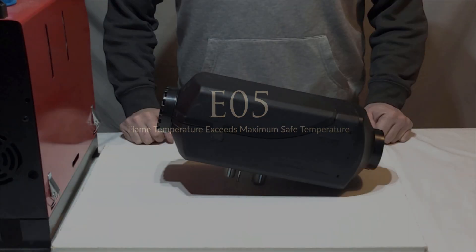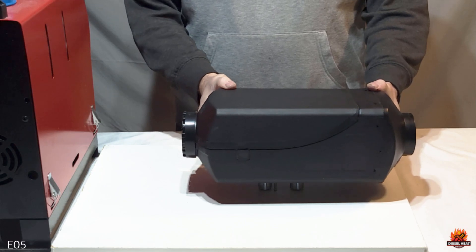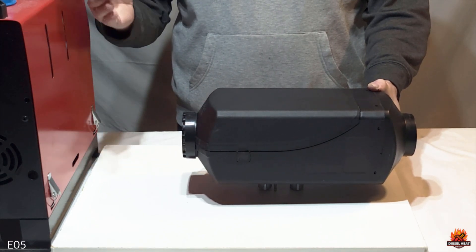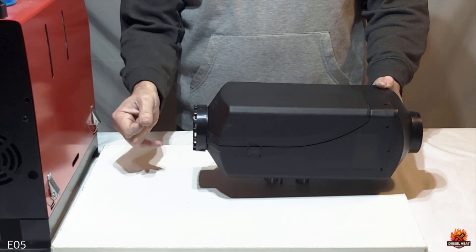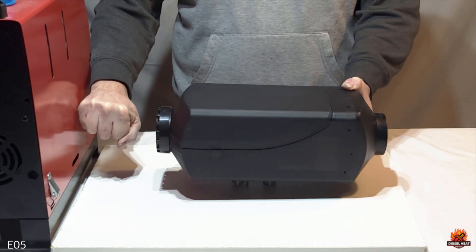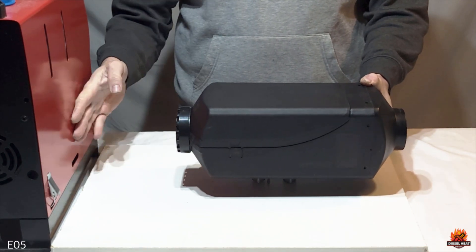Error code 5, flame temperature exceeds maximum safe temperature. To fix error 5, we need to check two places. We need to make sure there's adequate clearance around the cold air intake. A minimum recommended distance from any wall or structure from the air intake should be around 50 millimeters, which is about 5 centimeters or about 2 inches. 5 inches, in my opinion, is best.